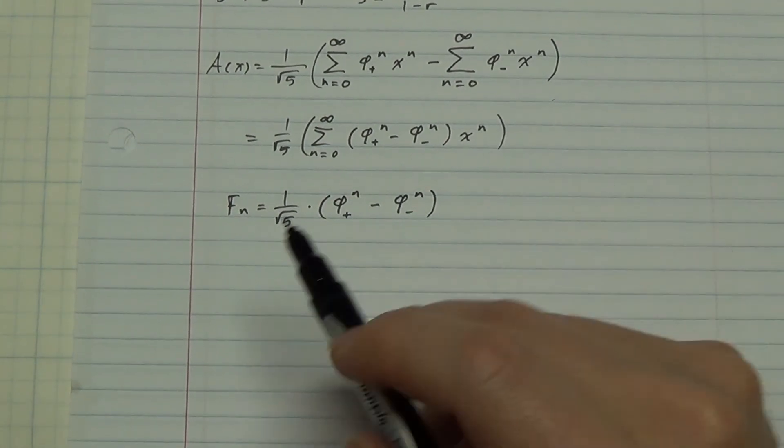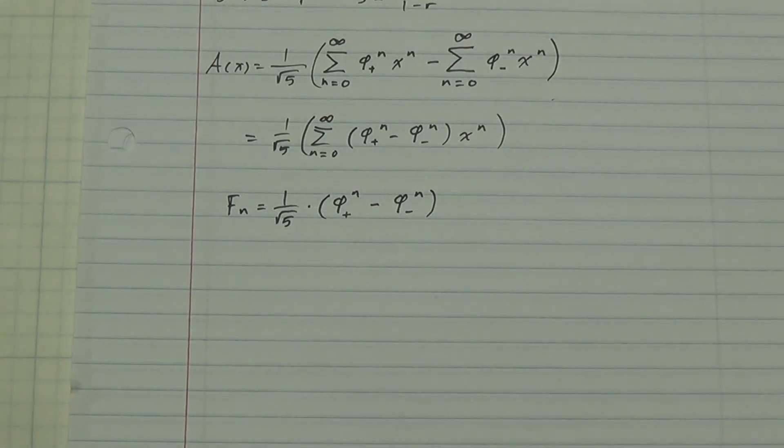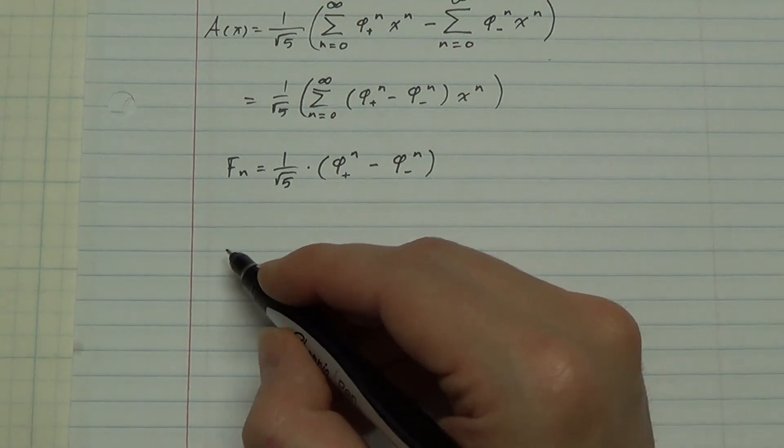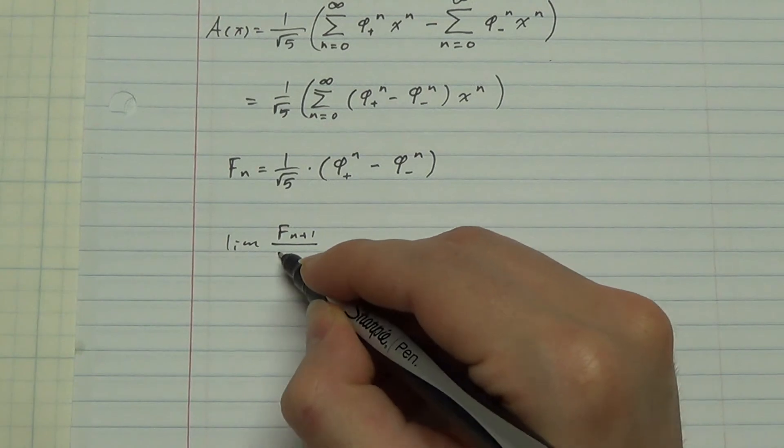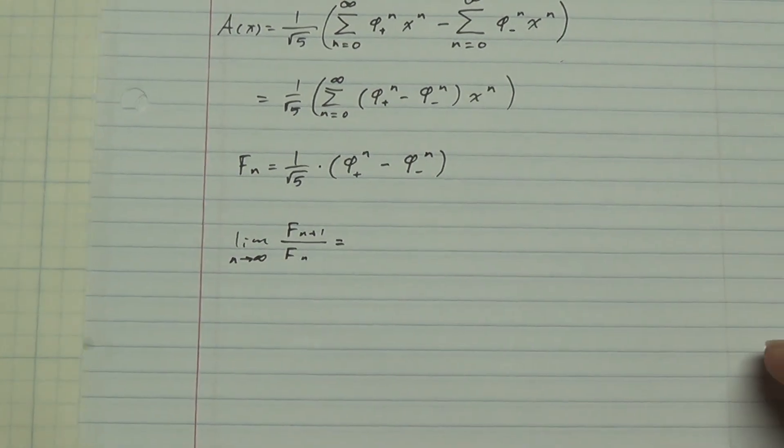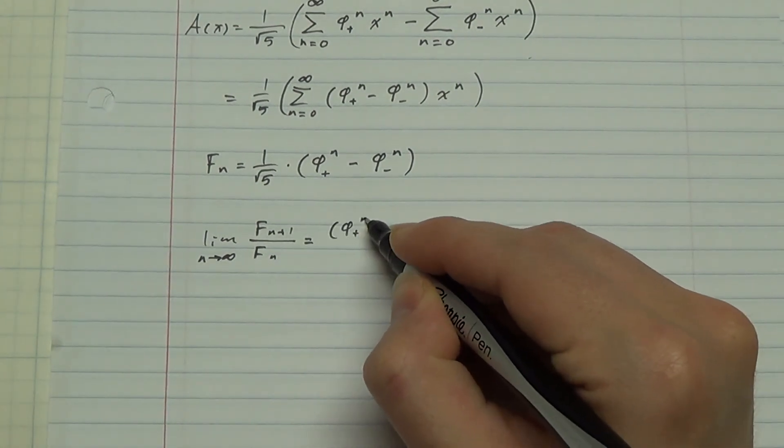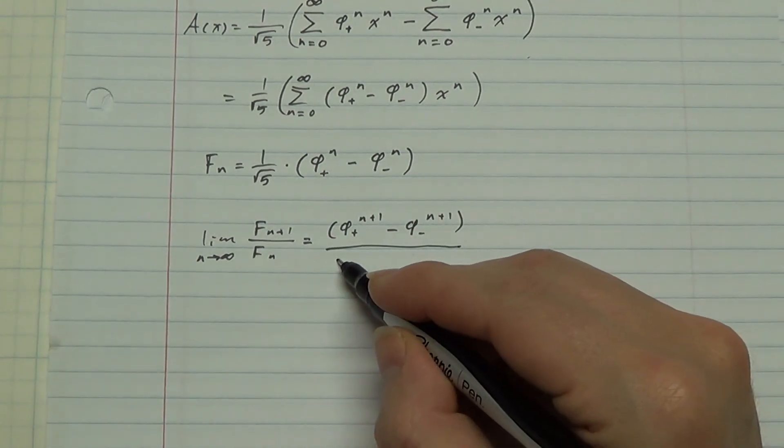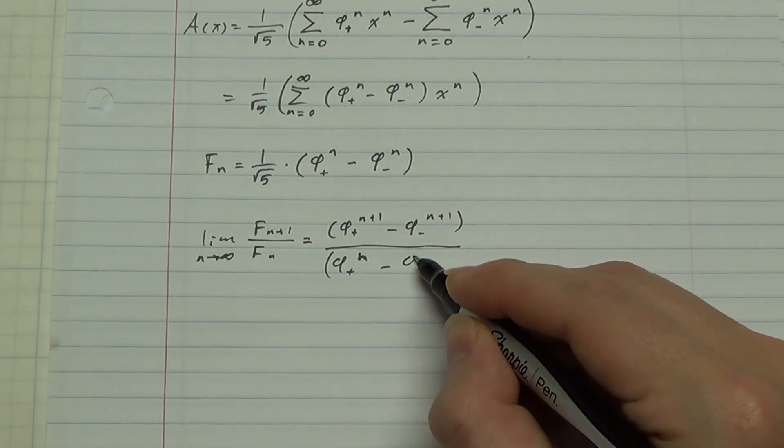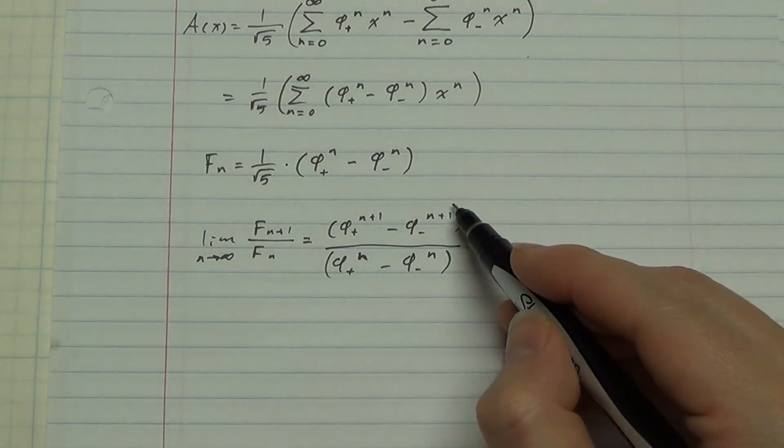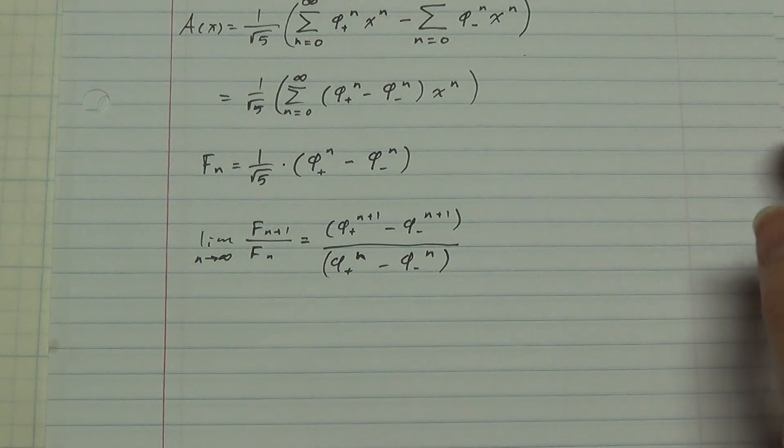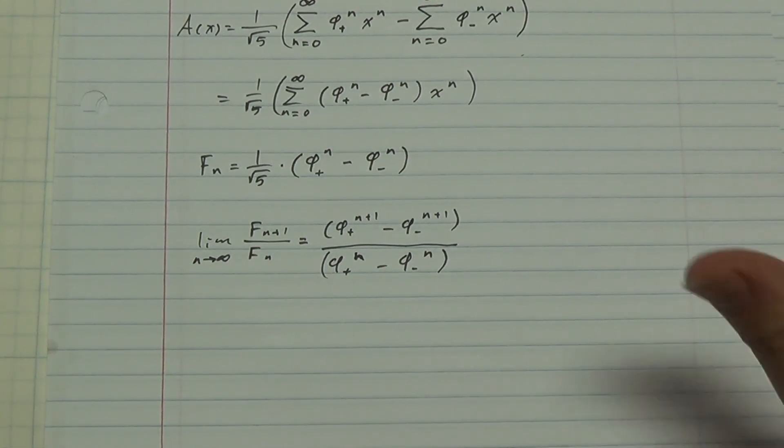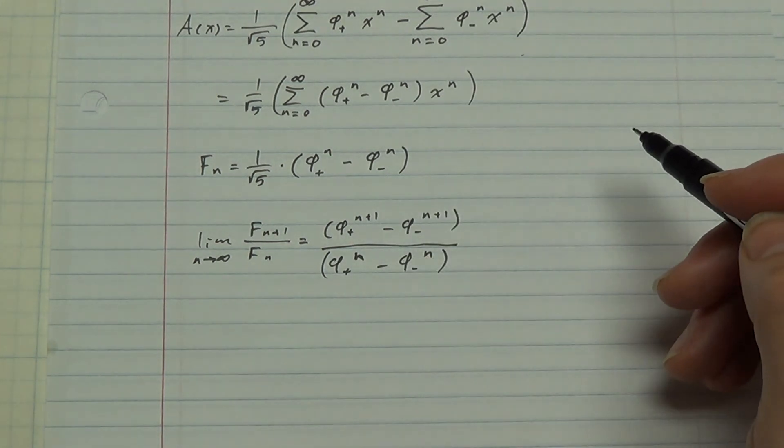Very nice little formula. Closed form solution for the nth Fibonacci number. All we have to do is plug in whatever n we want. If we want the 152nd Fibonacci number, plug in 152 into there, and we don't have to do all the addition. But now we can certainly see that the limit of F_n+1 over F_n, the root 5's cancel. Now, as n gets very large, both of these terms get very close to 0, since 1 minus root 5 over 2 is between negative 1 and 0. So these get very small.